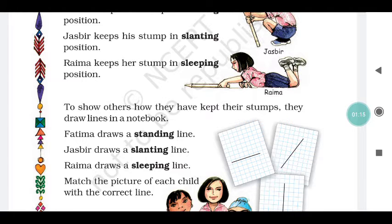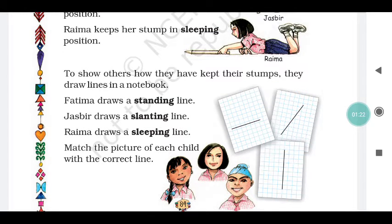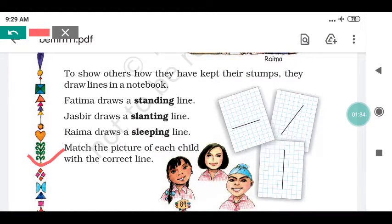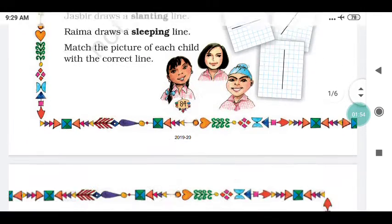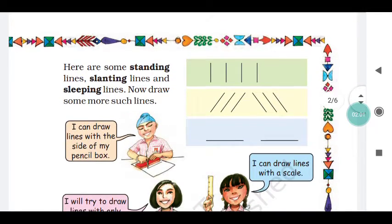To show others how they have kept their stump, they draw lines in a notebook. Here are some standing lines, slanting lines, and sleeping lines. Now draw some more.